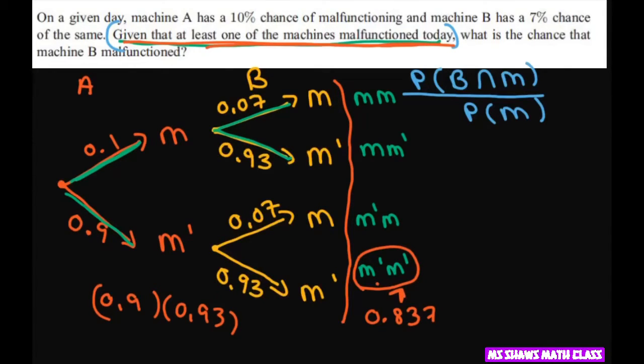To get at least one, all you have to do is take one minus 0.837. That's going to be a lot easier than trying to do all of these, because all of these three are at least one malfunction. So, 1 minus that is going to be 0.163.